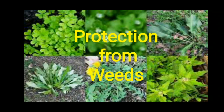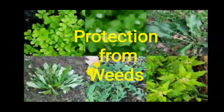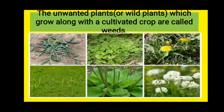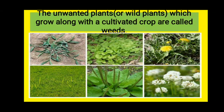When we grow a food crop in the field, in addition to the crop plants, many small unwanted plants also germinate and grow in the field naturally. The unwanted plants or wild plants which grow along with the cultivated crop are called weeds.